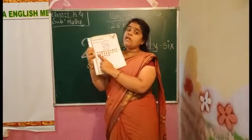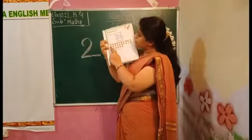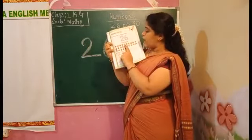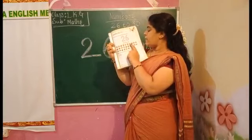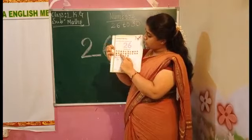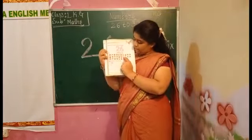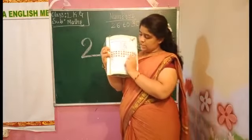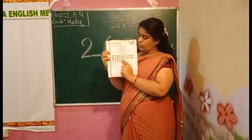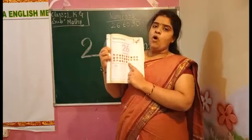Below they are given a box. You have to count how many boxes they are given. Count with me: 1, 2, 3, 4, 5, 6, 7, 8, 9, 10, 11, 12, 13, 14, 15, 16, 17, 18, 19, 20, 21, 22, 23, 24, 25, 26. They are given here 26 balls.